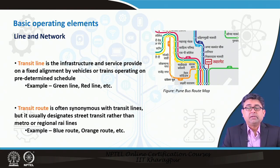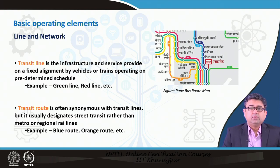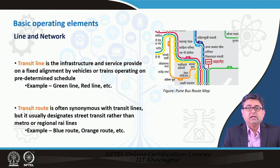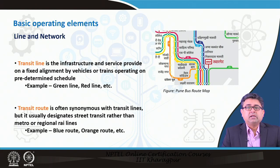You can see in the picture on your right side that there are several different lines you can take to go from point A to point B, such as yellow line, green line, red line, and so on. This is an example from the Pune bus route map. Transit line and transit route are synonymous to each other, whereas a transit route usually designates street transit rather than metro or regional rail lines — meaning they operate along with other transportation modes such as cars and auto rickshaws.